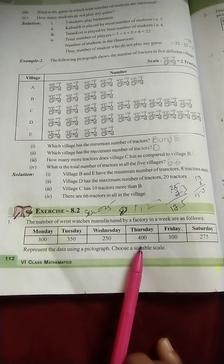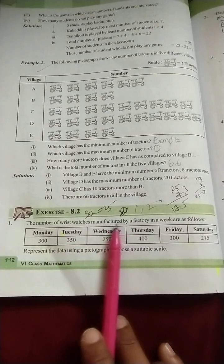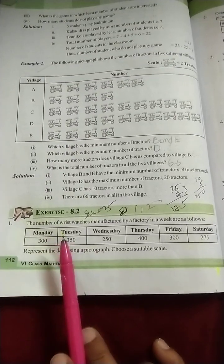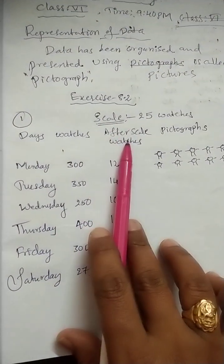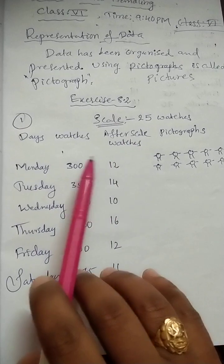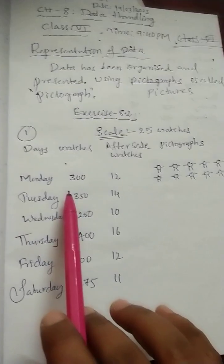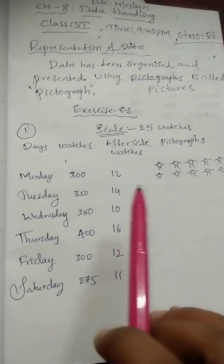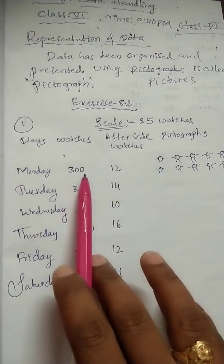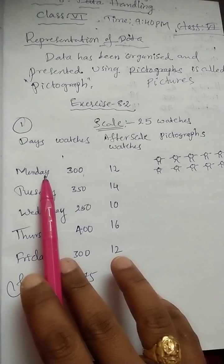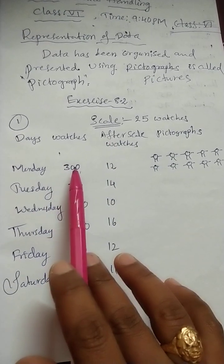We should use a scale and draw pictographs of wristwatches. The manufacturing company produced Monday 300, and so on. Before choosing a scale, these are the number of wristwatches manufactured on each particular day — for example, 300 wristwatches on Monday. Why should we take a scale? What is the use of a scale?